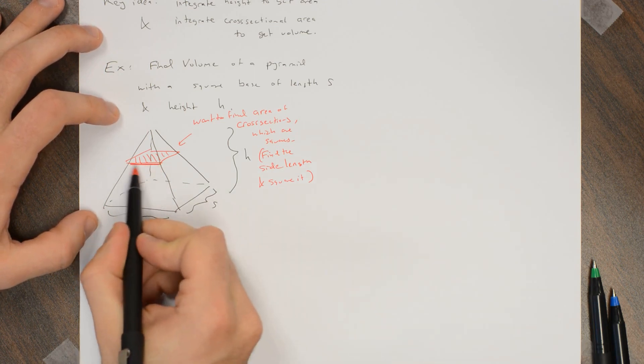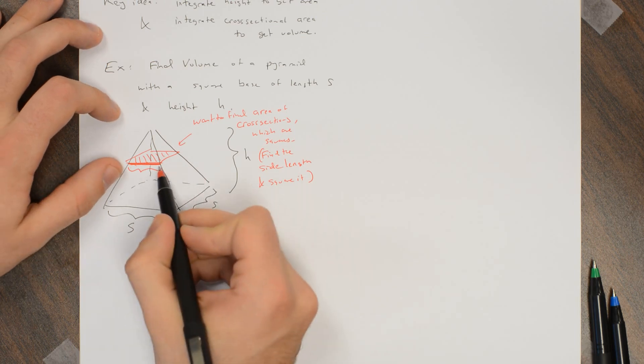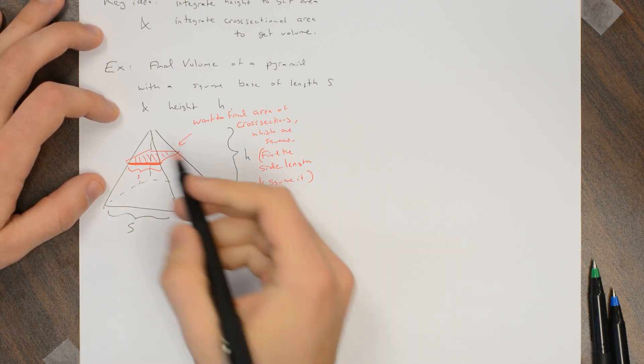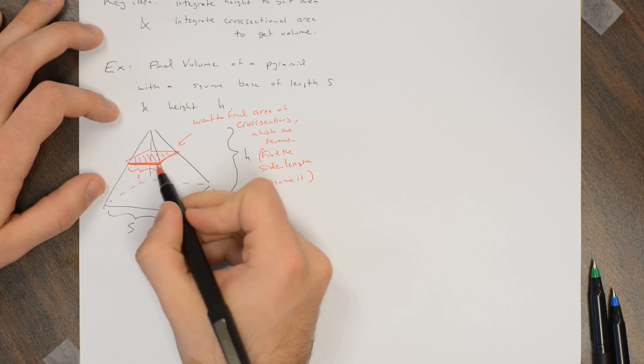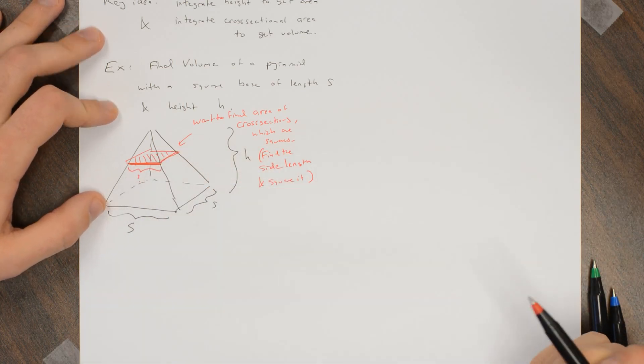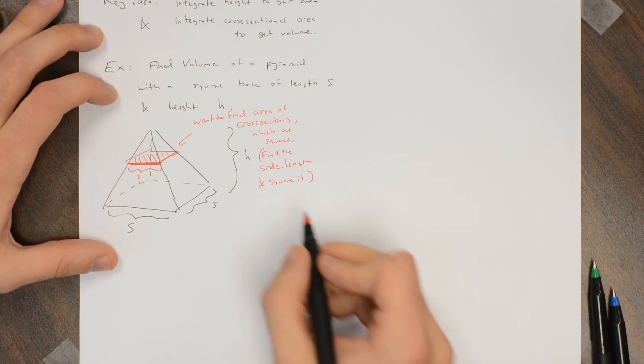So I just need to find, for any given height off the ground or something, what is this width? And then if I take that width and square it, I get the area of this cross-sectional square, and I integrate the area of the cross-sectional square to get the volume of the pyramid.